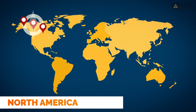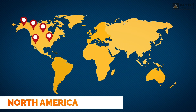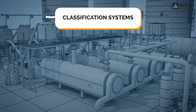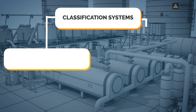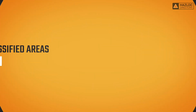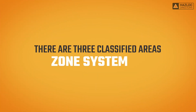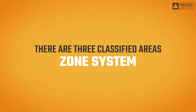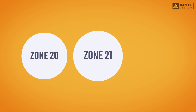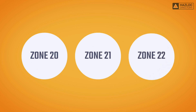Dust explosive atmospheres are classified in North America using two different classification systems: the class and division system and the zone system. There are three classified areas in the zone system that relate to dust explosive areas: Zone 20, 21, and 22.